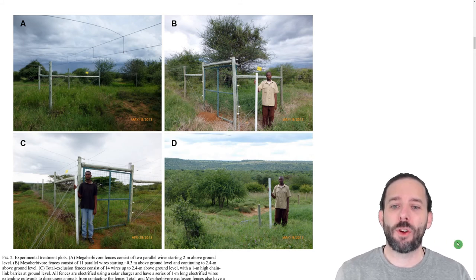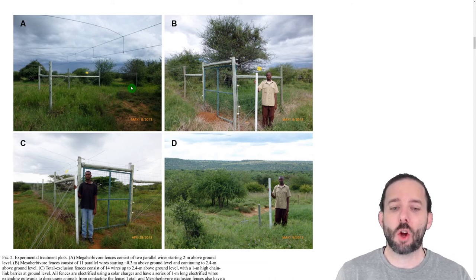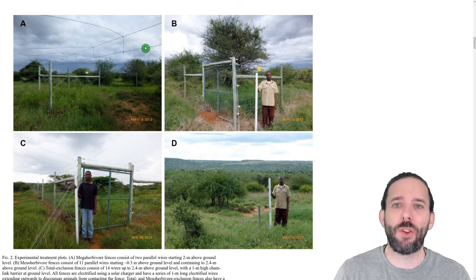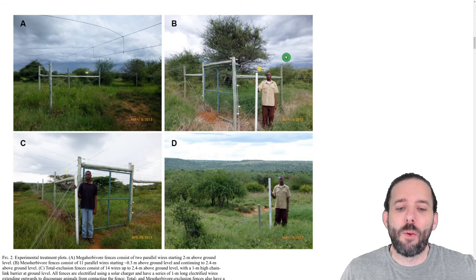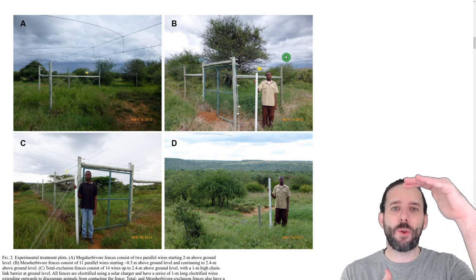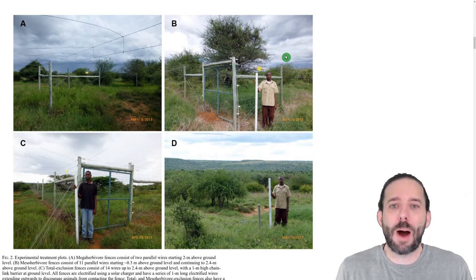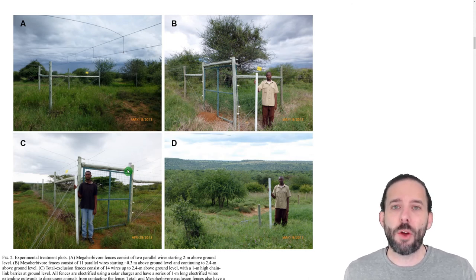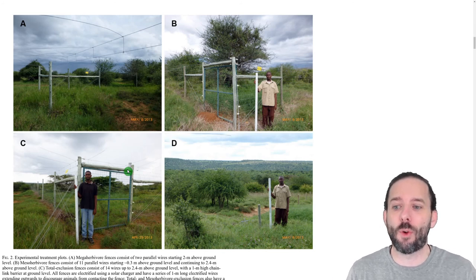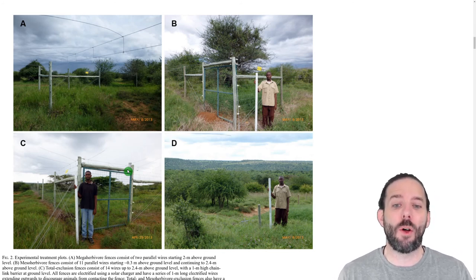There are three different treatments. In the upper left we see mega herbivore exclosures, where wires are put up at about two meters to exclude elephants and giraffes. The top right shows meso herbivore exclosures, using fences starting about a third of a meter off the ground to exclude moderately sized herbivores like Impala. The bottom left shows full exclosures that exclude all mammalian herbivores with fences going all the way to the ground, and the bottom right shows control plots.